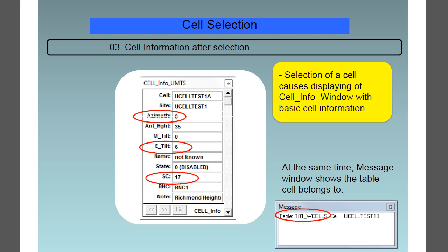Feature number 3 is the cell selection, or rather getting the cell information after selecting them. Selecting a cell causes the displaying of the cell info window with the basic cell information. And at the same time, the message window shows the table that the cell belongs to.